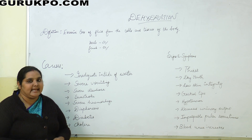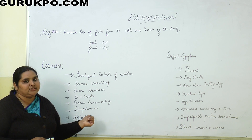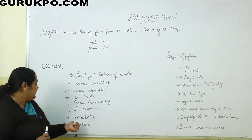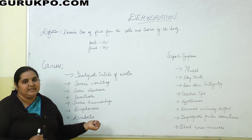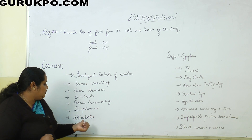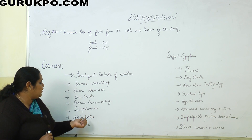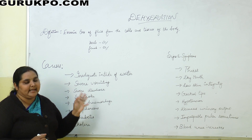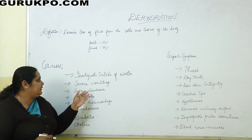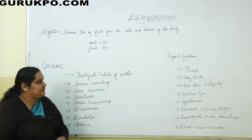Next cause is diaphoresis, which is excessive sweating. When a person perspires excessively for a long time, they lose fluid from the body. Next is diabetes — elevated sugar levels in diabetic patients cause increased urine output, leading to dehydration. Then cholera — in cholera, both vomiting and diarrhea are present, affecting the person's fluid and electrolyte balance.